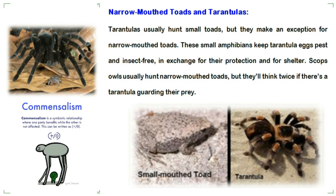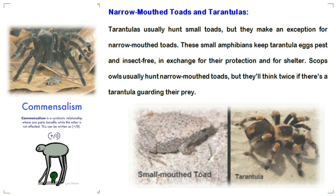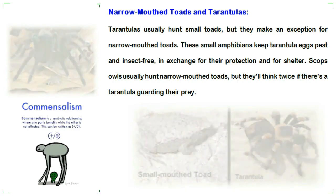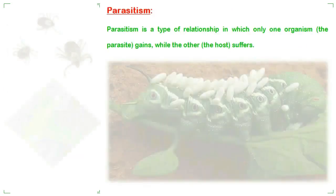Tarantulas usually hunt small toads, but they make an exception for microhylid toads. These small amphibians keep tarantula eggs pest- and insect-free in exchange for protection and shelter. Scops owls usually hunt microhylid toads, but they'll think twice if there's a tarantula guarding their prey.